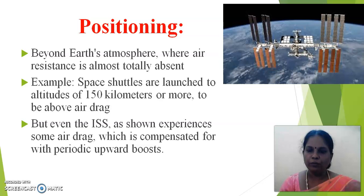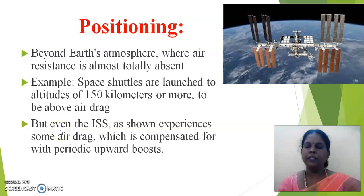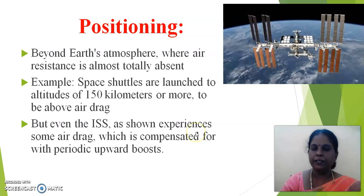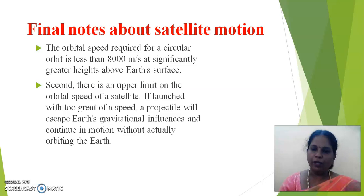Since the speed of the satellite is 8,000 meters per second — equal to 29,000 kilometers per hour — this speed is very high, and any object traveling at this speed within earth's atmosphere would burn up. Therefore, space satellites are launched to altitudes of 150 kilometers or more to be above the air drag, where air resistance is almost totally absent. Even the International Space Station experiences some air drag, which is compensated for with periodic upward boosts.